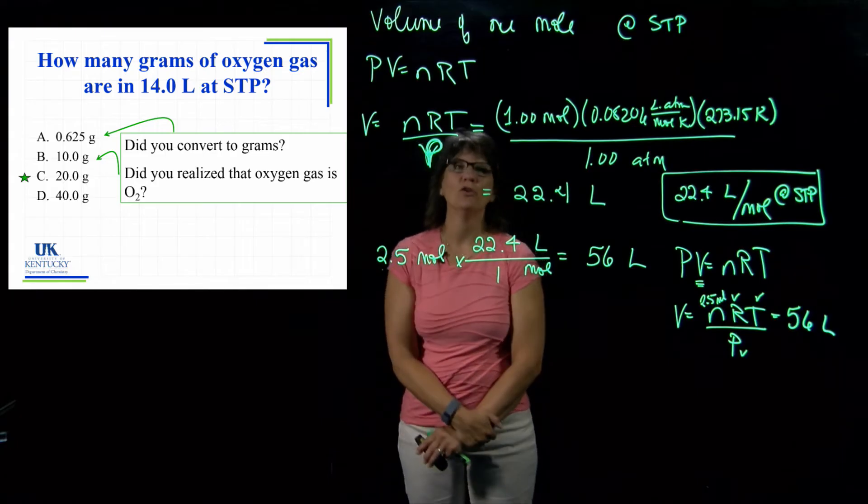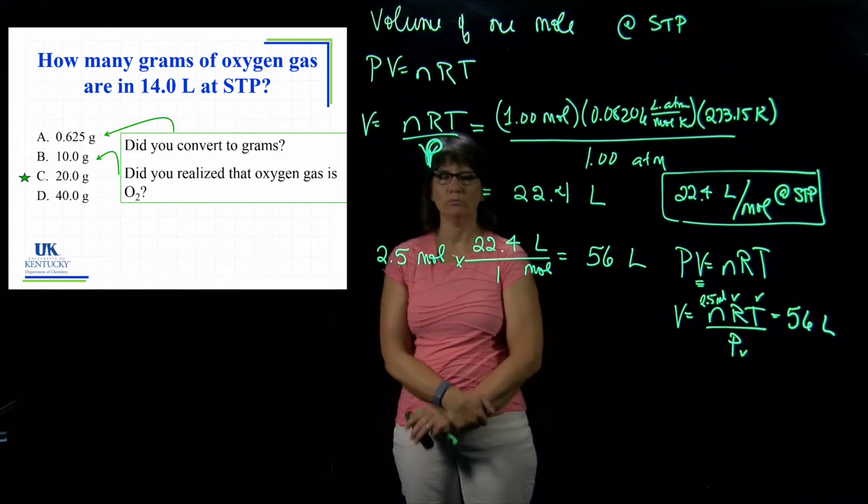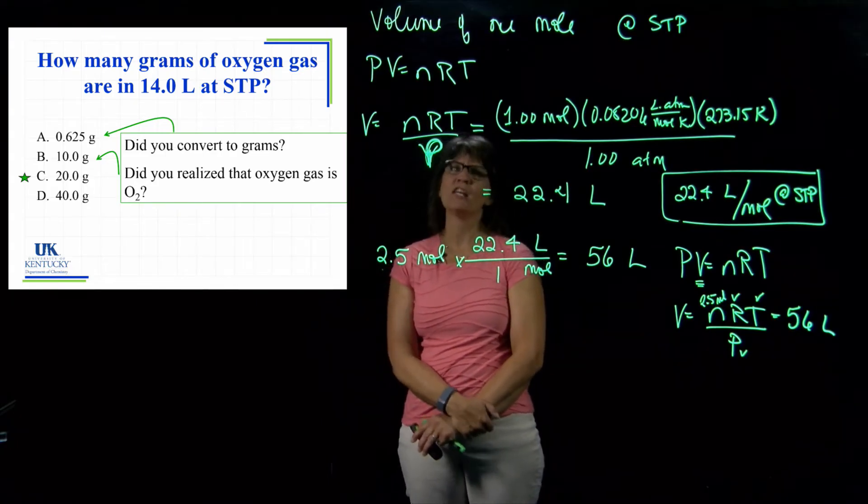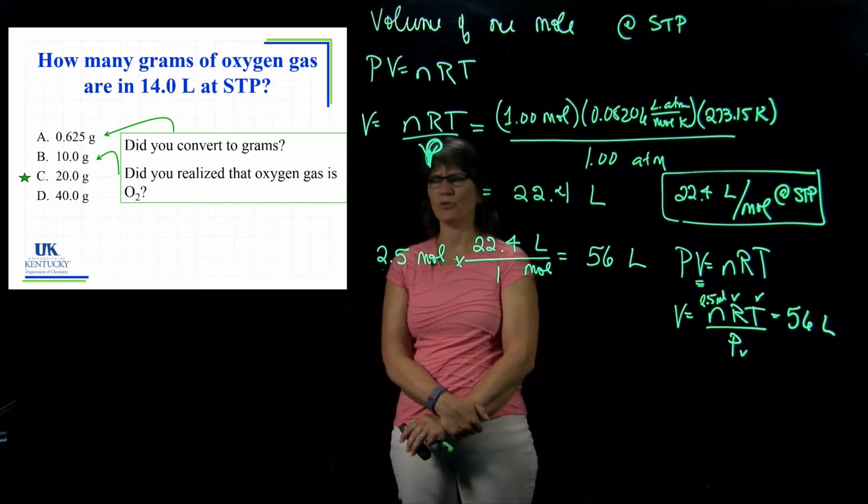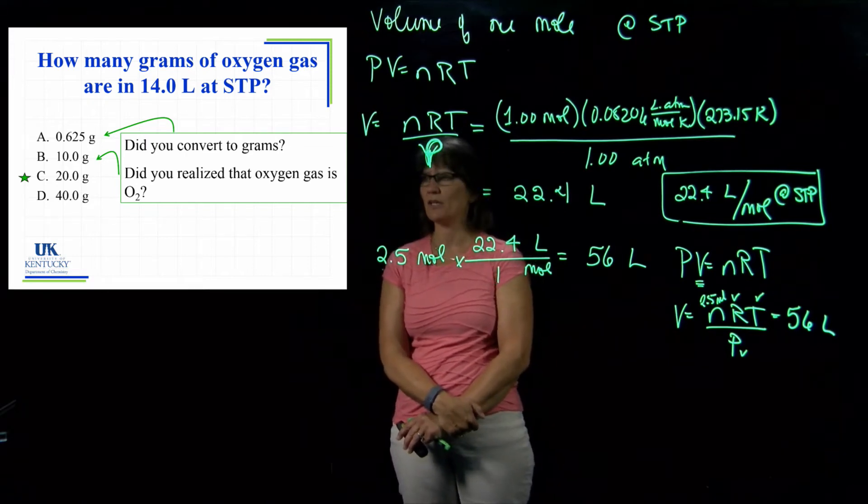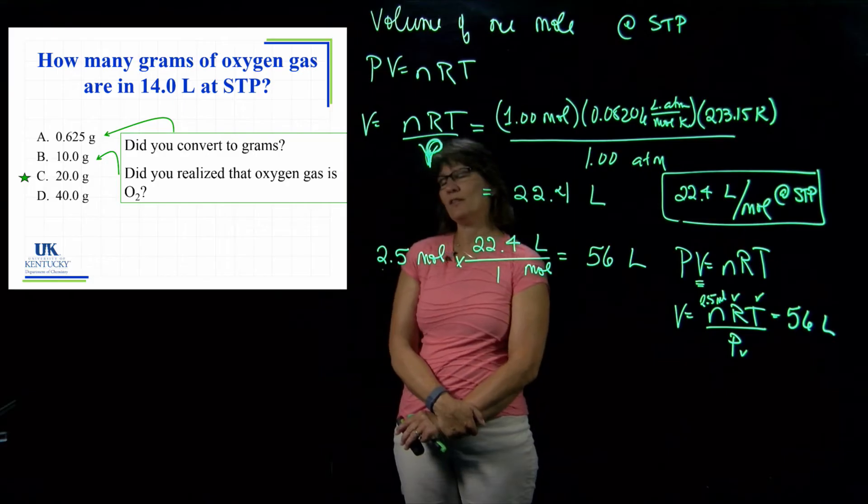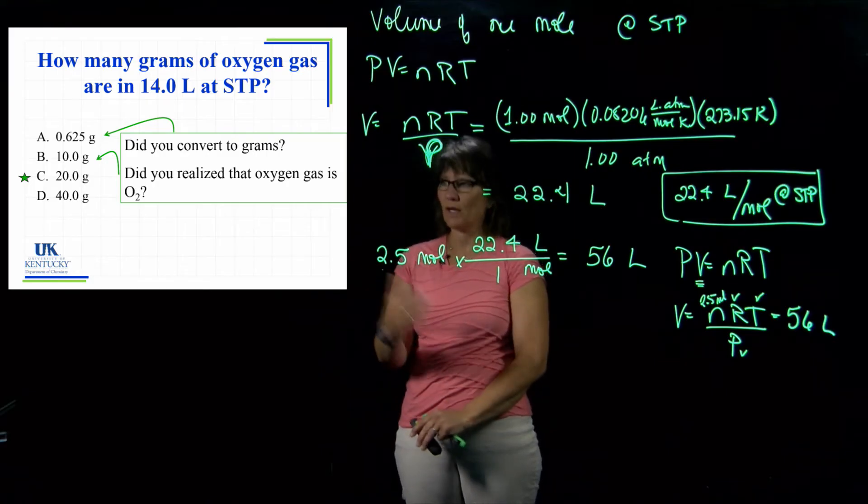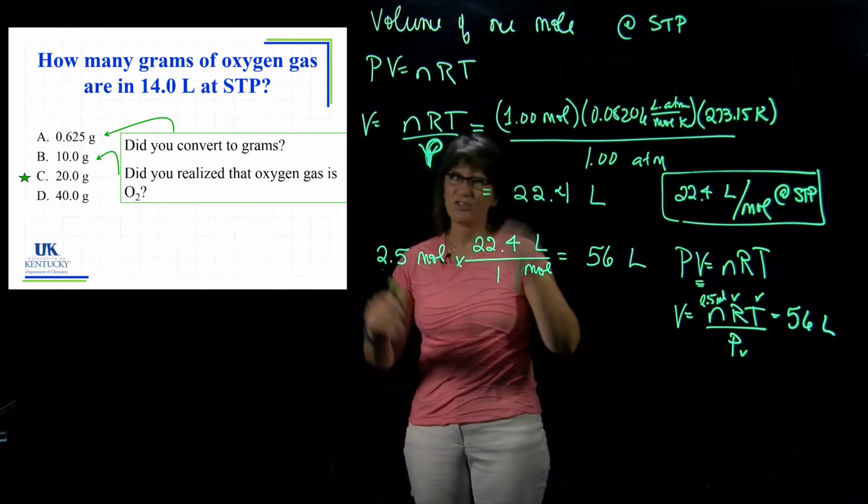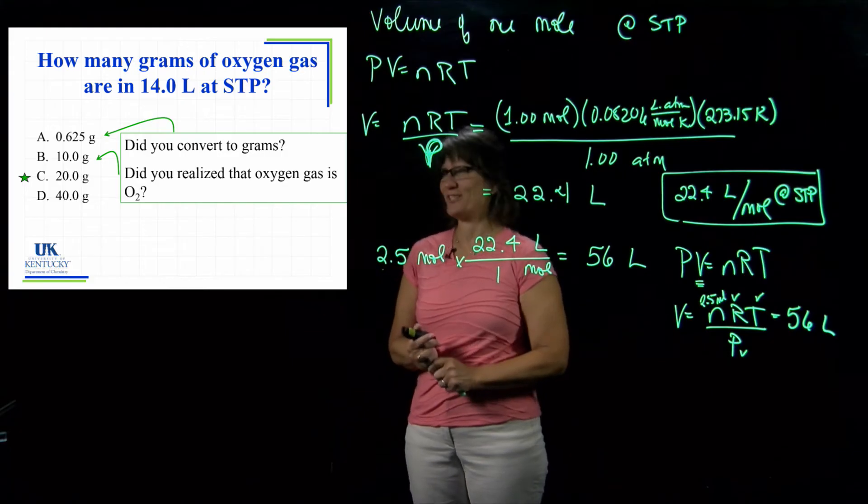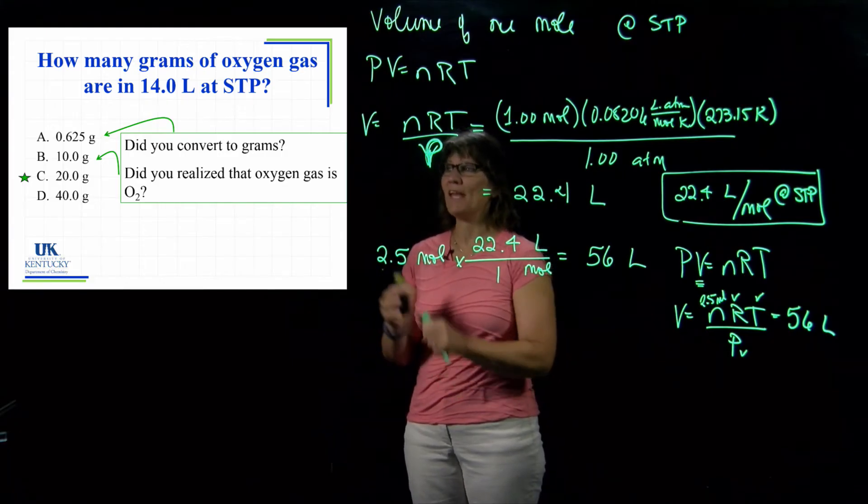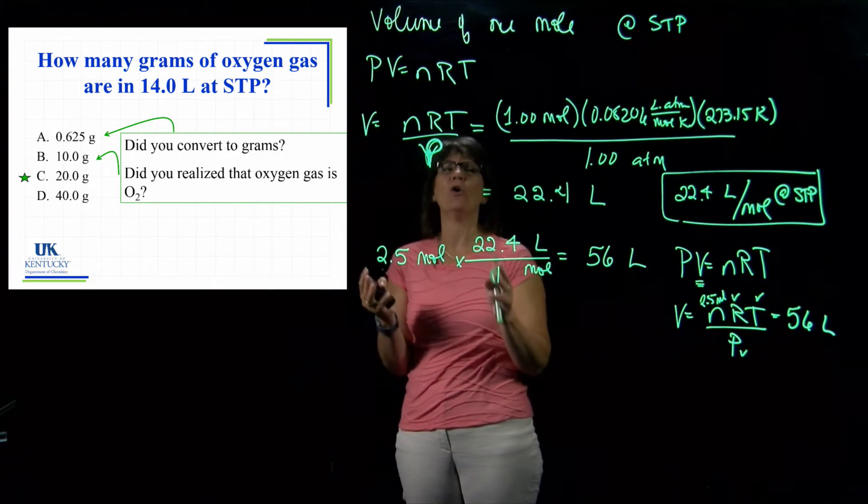If you picked B, maybe you used a molar mass of just O and didn't think about oxygen gas being a diatomic molecule, so it's O2 that you have to consider. That would have given you 10 grams. If you'd done it correctly, you got the 20, and I just threw 40 in there because I wanted another choice.